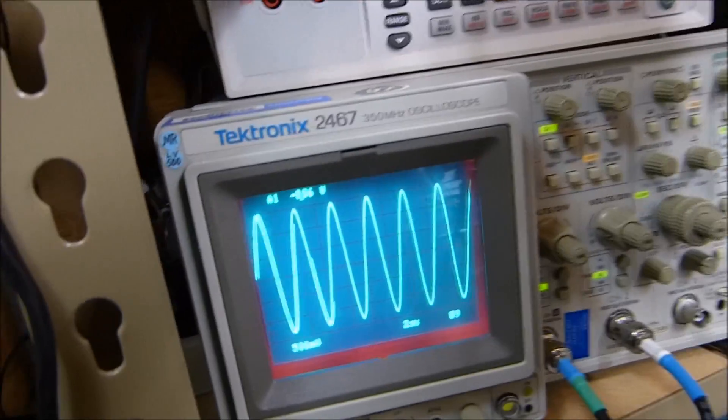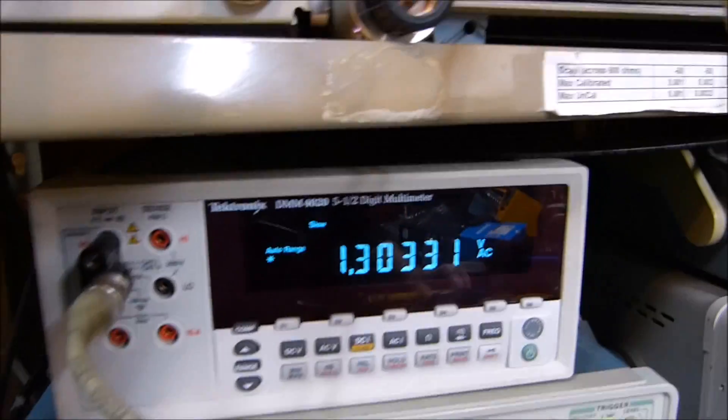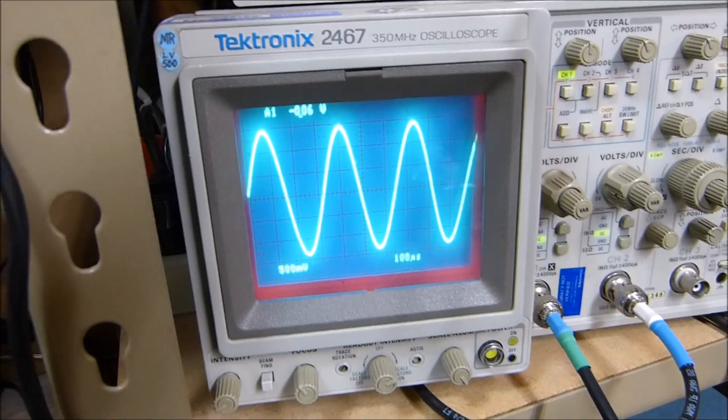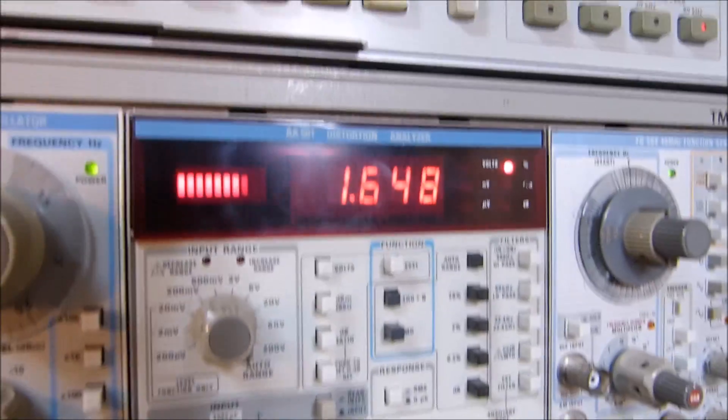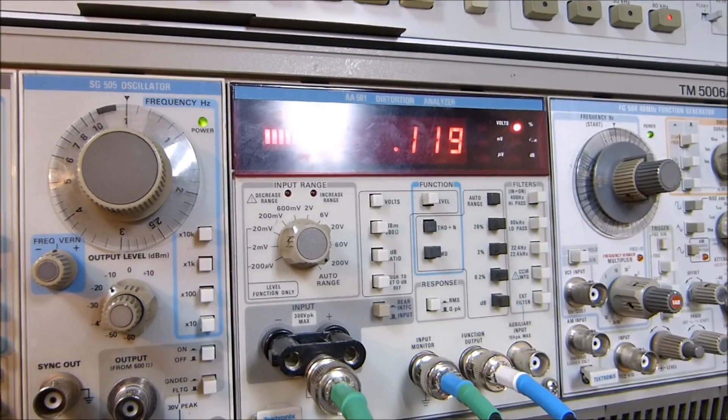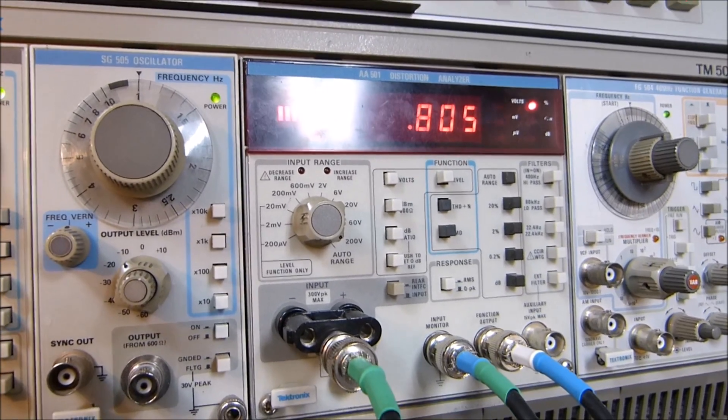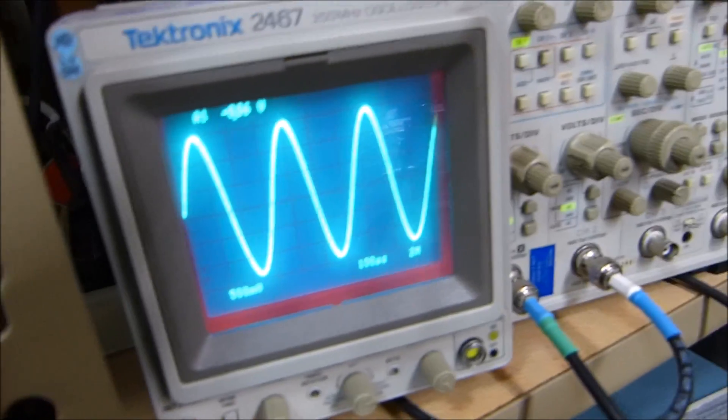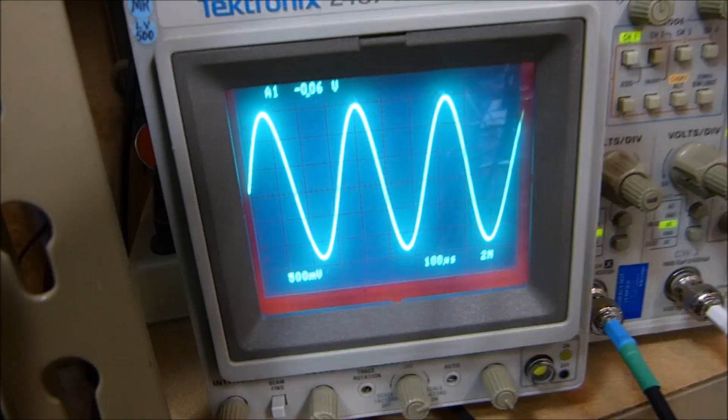Let's go to 3 kilohertz. We still got our 1.3 volts, and there's our, that's why our THD is jumping around, doesn't know what to do with that wavering in there and then that little blip at the bottom. But I don't have time to work on it right now.